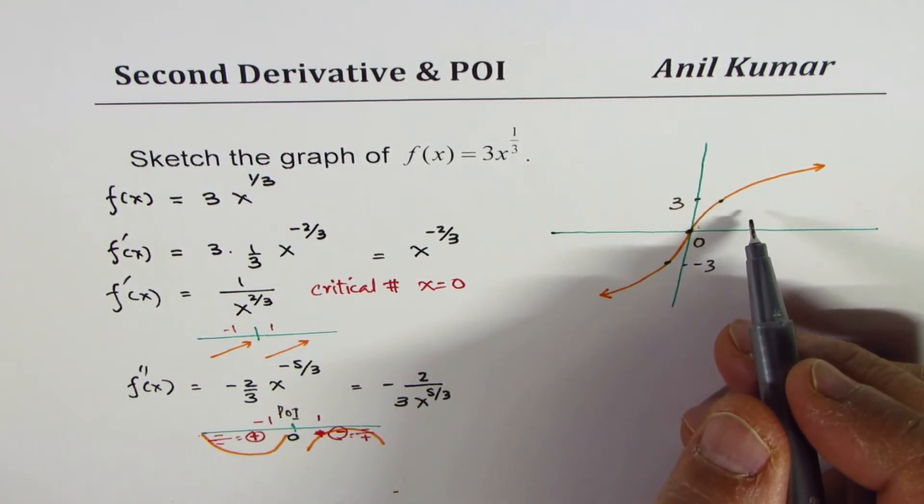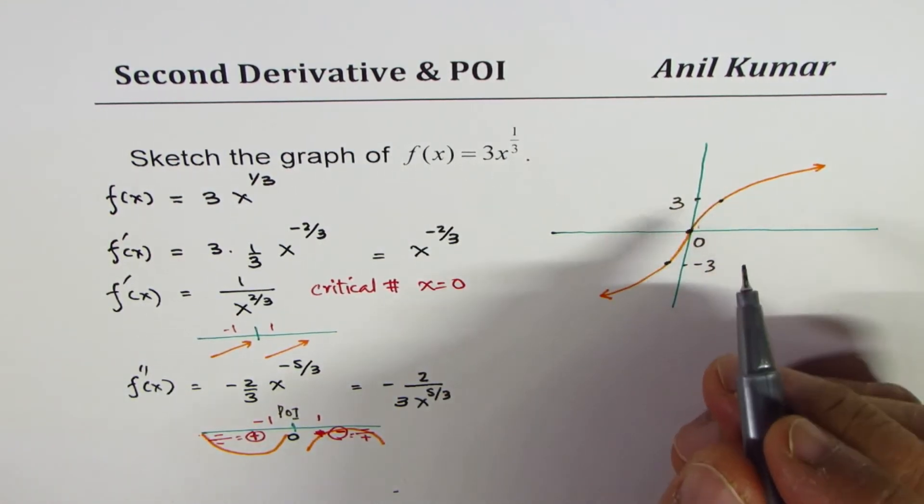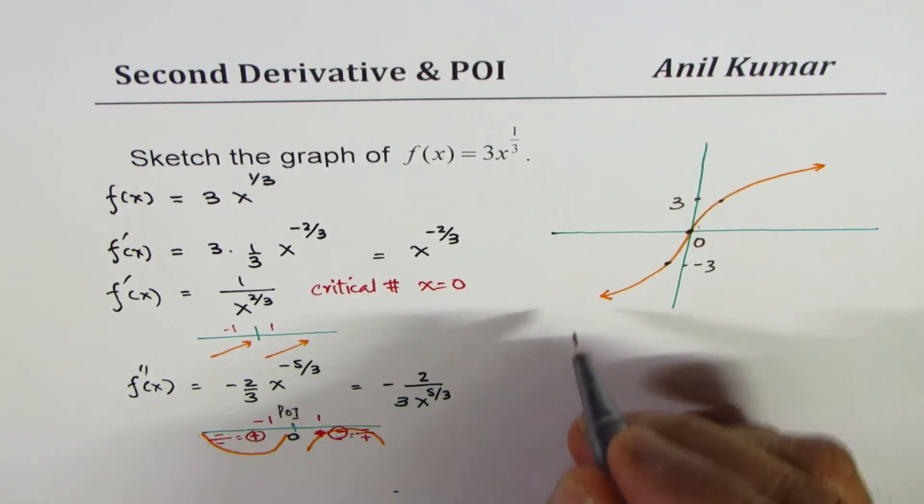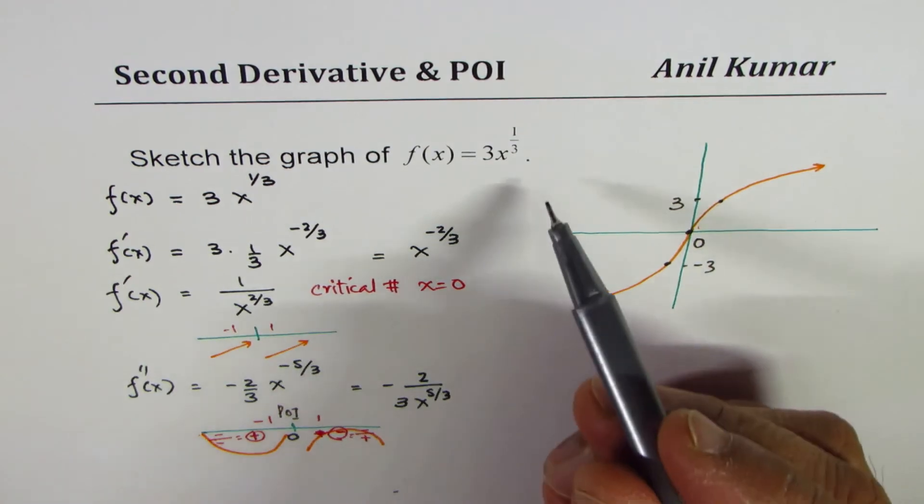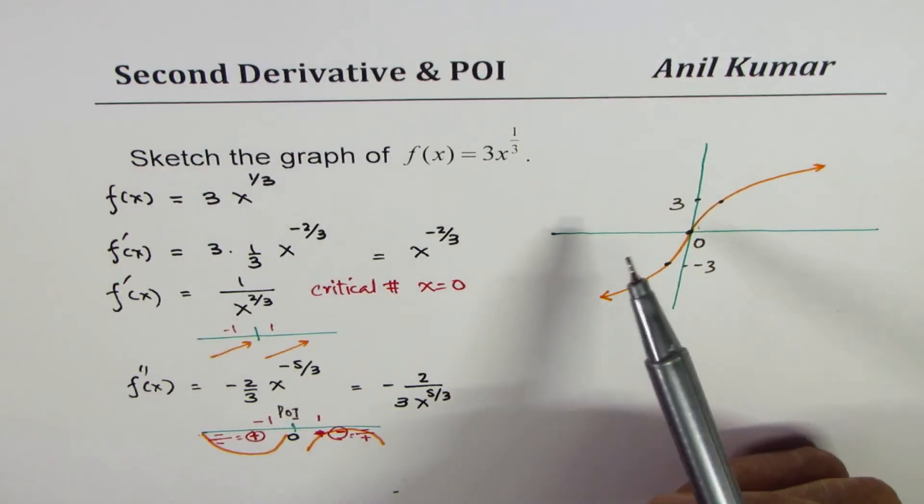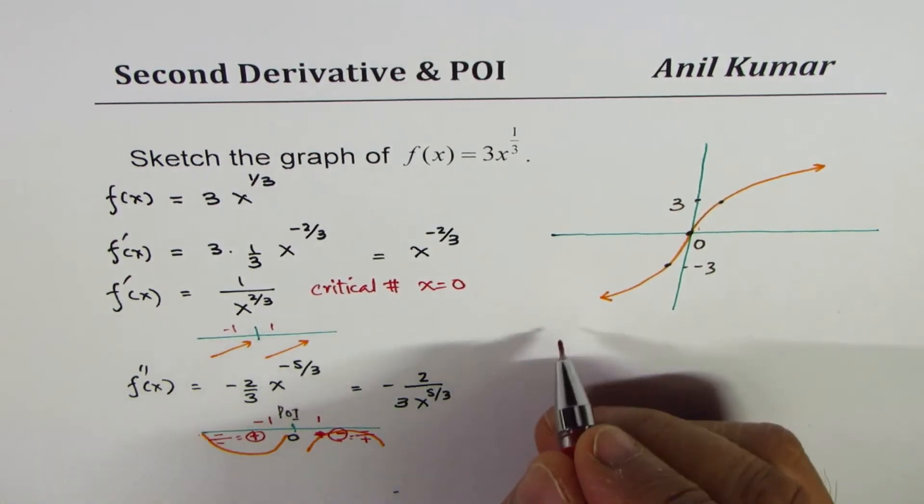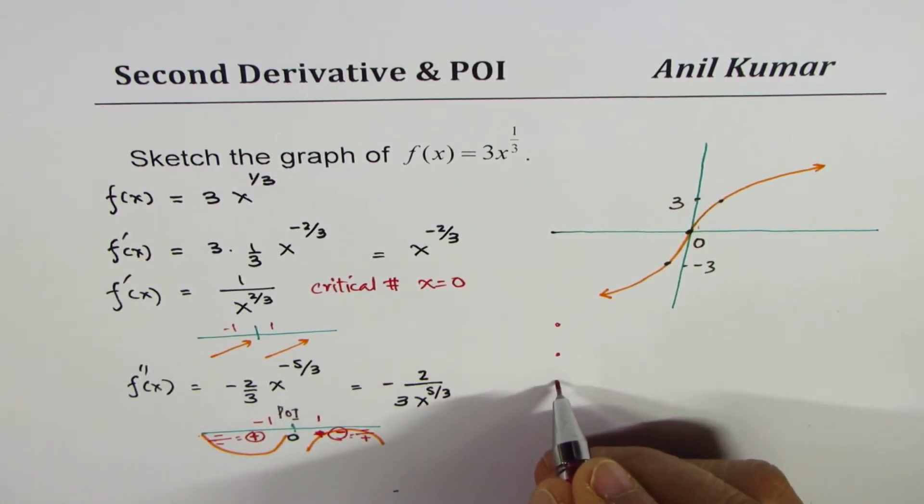But also remember that we could check if this graph has some kind of, is it even or odd. So if you could do, in addition to what I've done, my focus was mainly on second derivative. But if you really have to sketch this graph, then what you should be doing is, you should consider these points also.